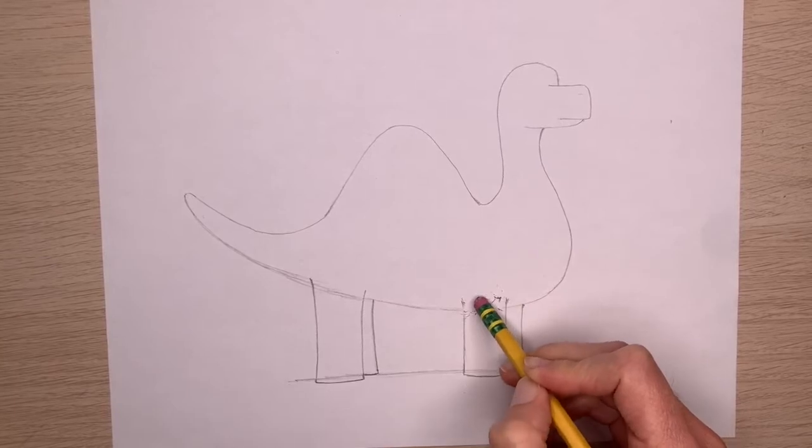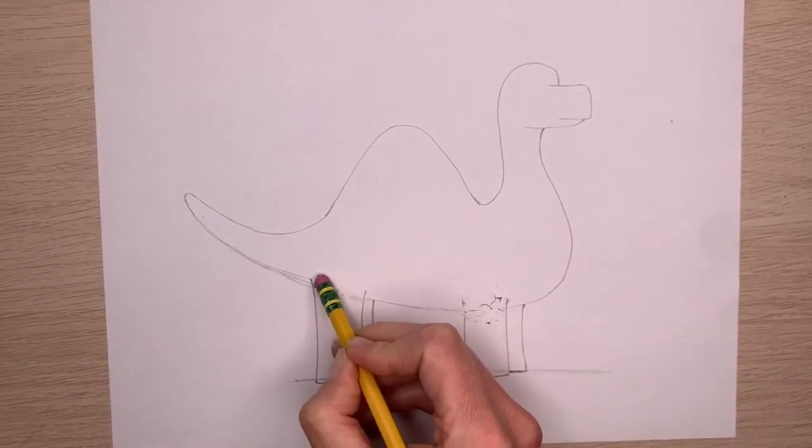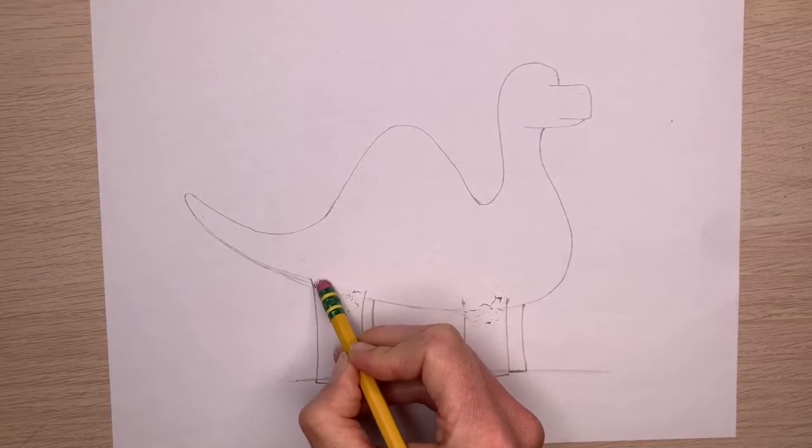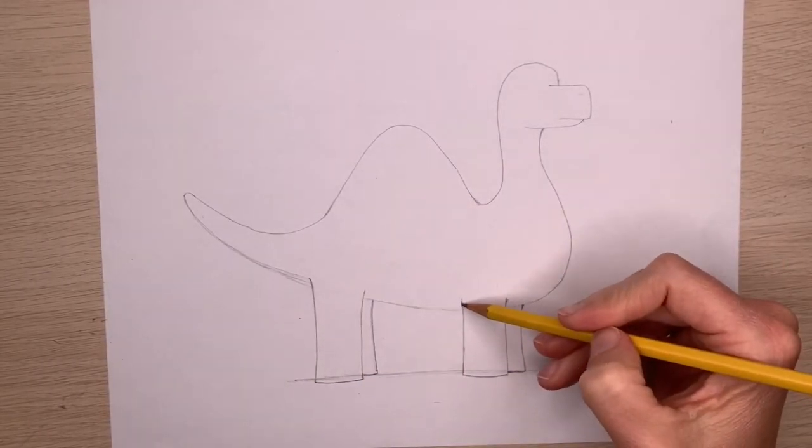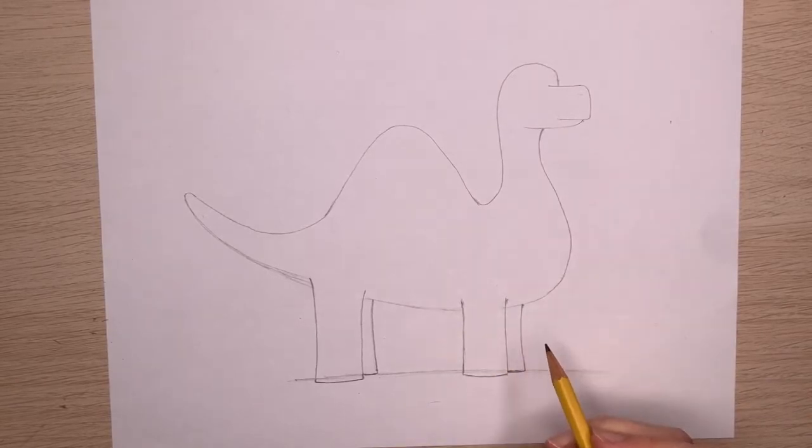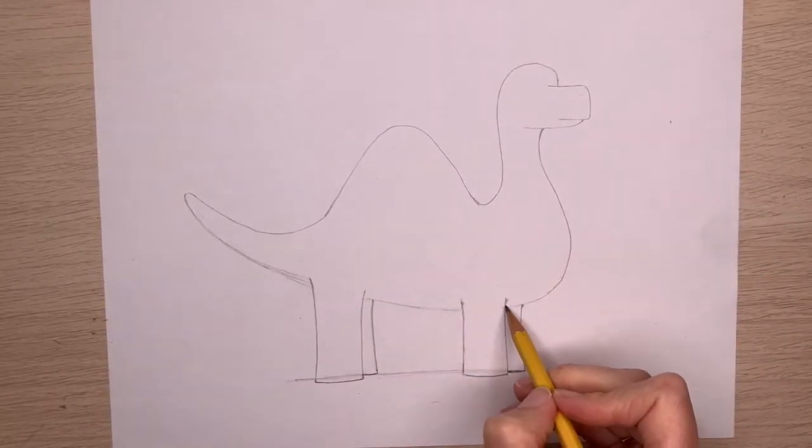Take your eraser and erase the line only on the leg that's closest to us. So the front and rear legs here, we're going to erase just this little part of the line. And that's what's going to make it look like this dinosaur is all connected and one large drawing, one large piece.